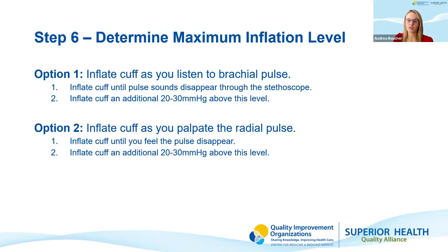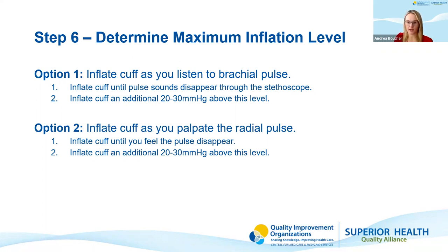The second option for the maximum inflation level doesn't require your stethoscope. With the cuff on the patient's arm, inflate the cuff while palpating the radial pulse at the patient's wrist. As you inflate, feel for the radial pulse to disappear, note that gauge reading, and then inflate an additional 20 to 30 millimeters of mercury above that level. This ensures it's done on a patient-by-patient basis so we're accurately capturing these readings.